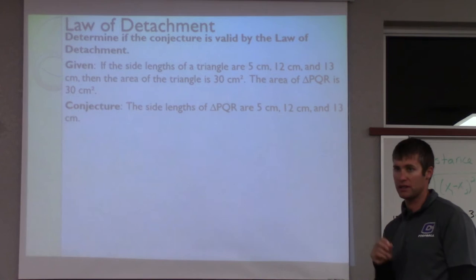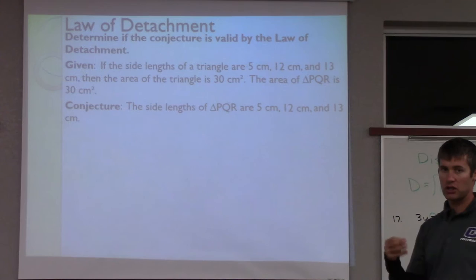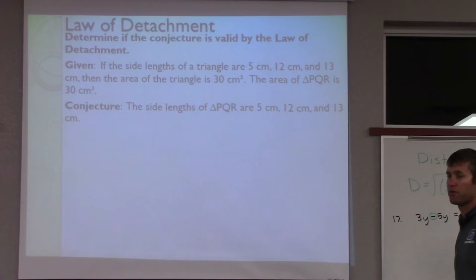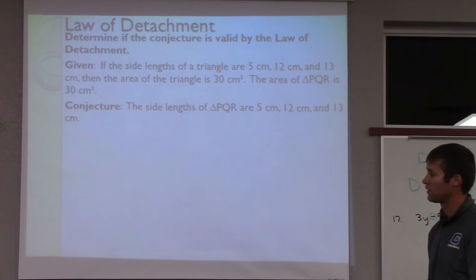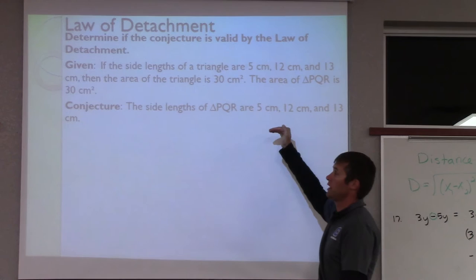We're going to use the law of detachment — an if-then statement. We want to check to see if the hypothesis and conclusion are true. If the side lengths of a triangle are 5, 12, and 13, then the area is 30 centimeters squared. The area of triangle PQR is 30 centimeters. So our conclusion would be that the side lengths are 5, 12, and 13.